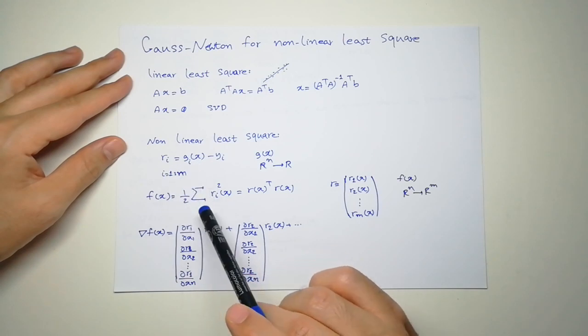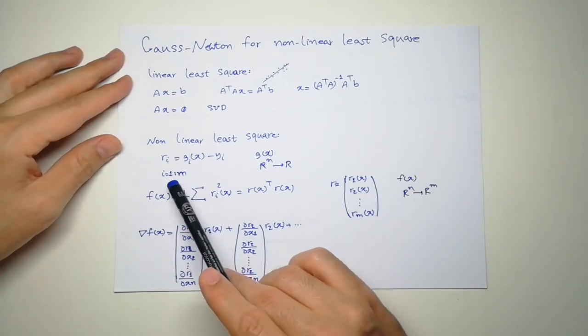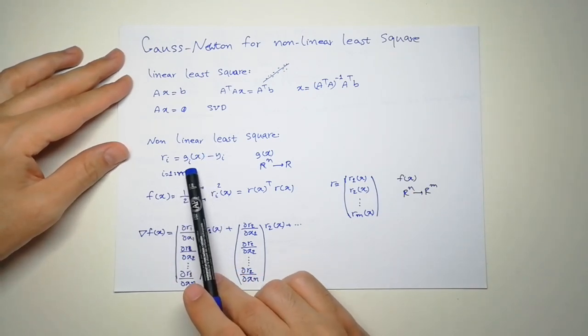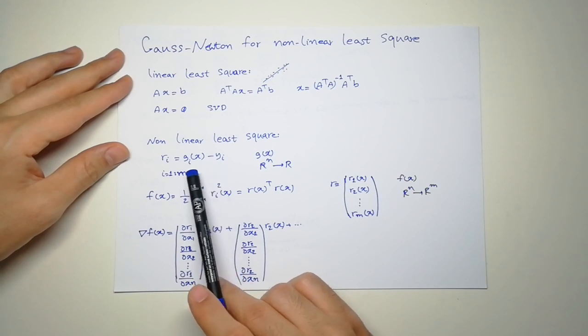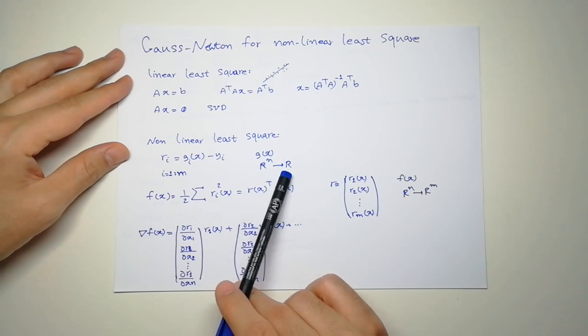But not every problem is linear. Sometimes we have nonlinear problems. Imagine we have a function, M functions of the form G of X. X is a mapping from R^n to R, so X has N dimensions.